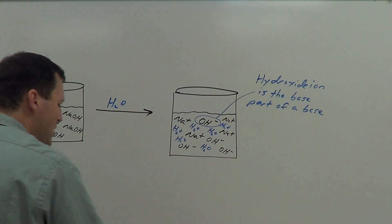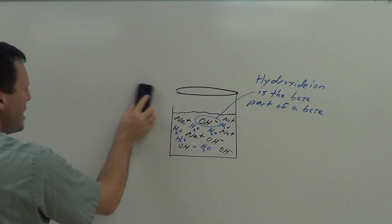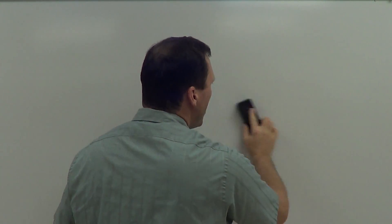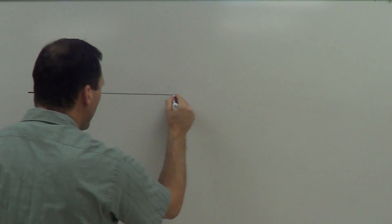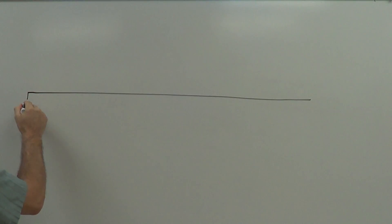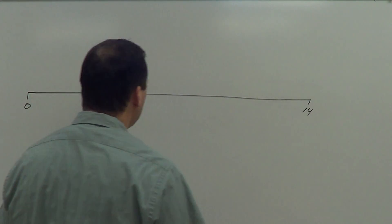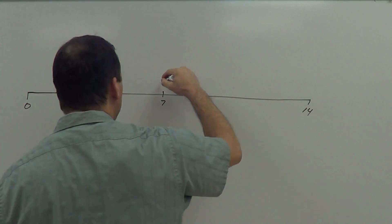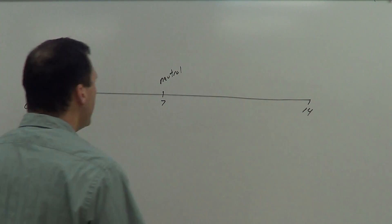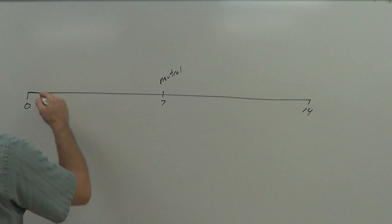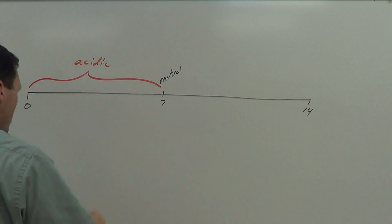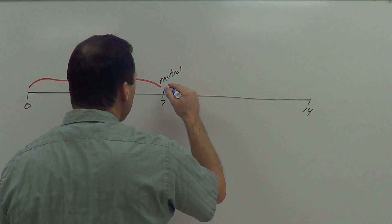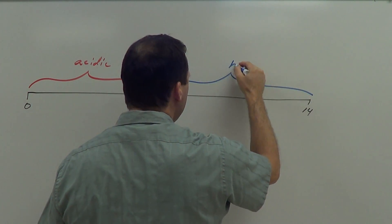How do we measure acids and bases? What type of scale do we use? We're going to use a pH scale. The pH scale goes from 0 to 14, with 7 being neutral. Anything less than 7 is going to be acidic, and anything greater than 7 is going to be basic.